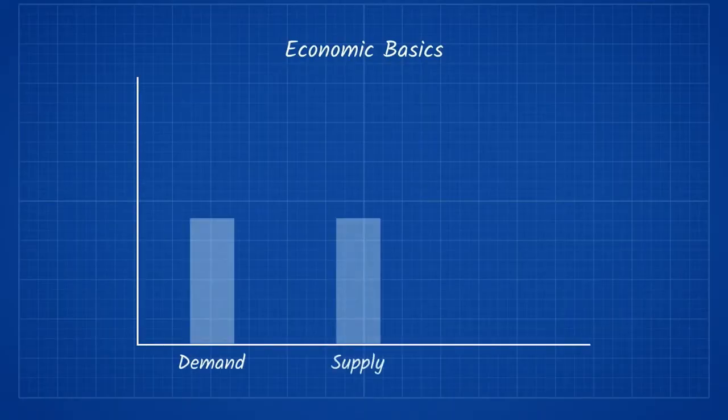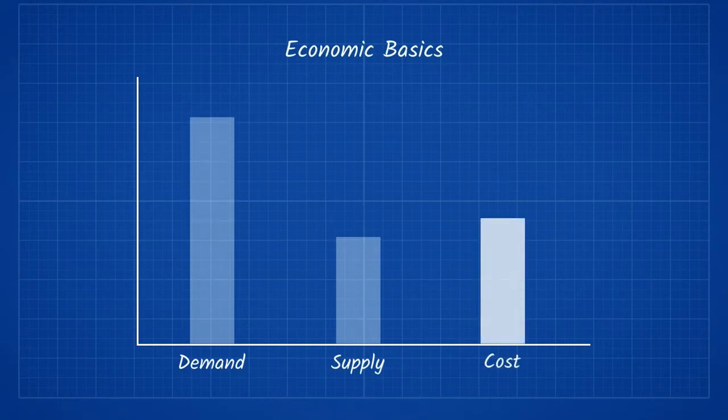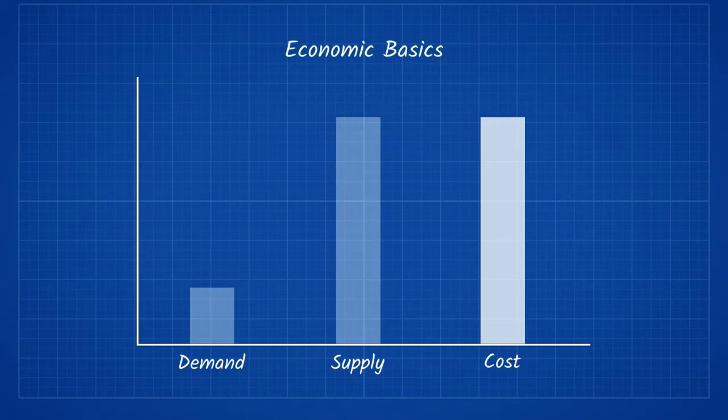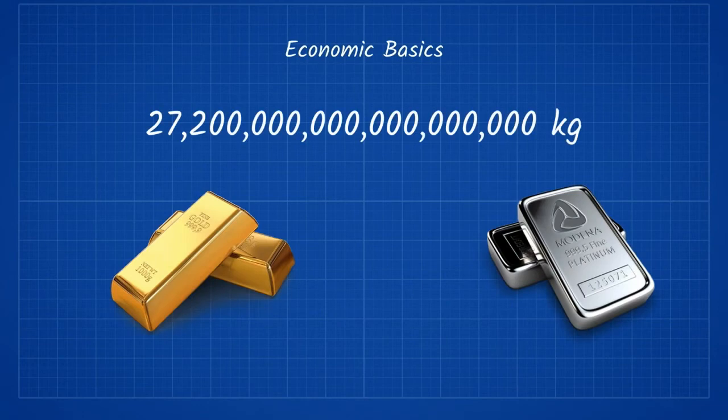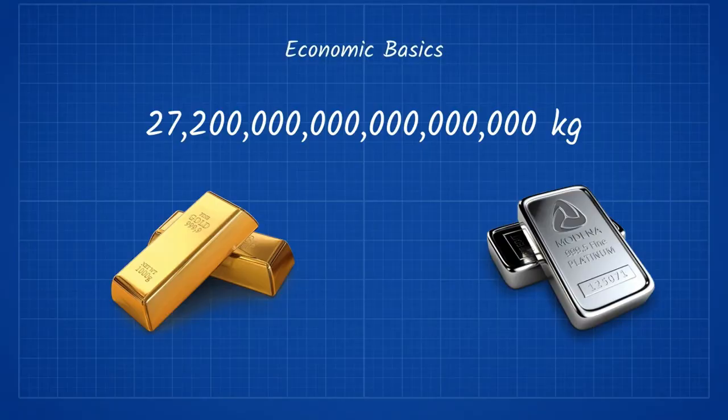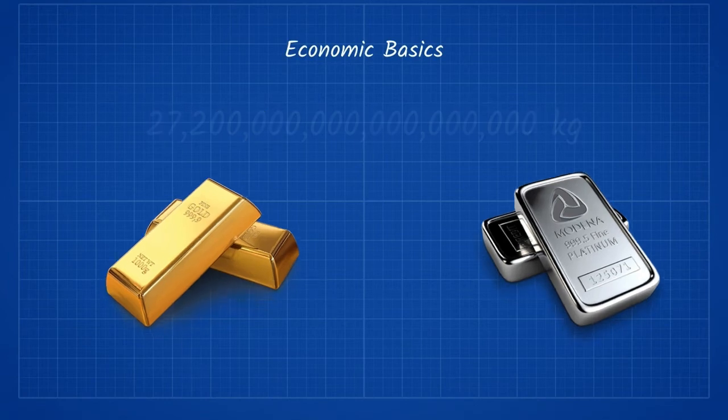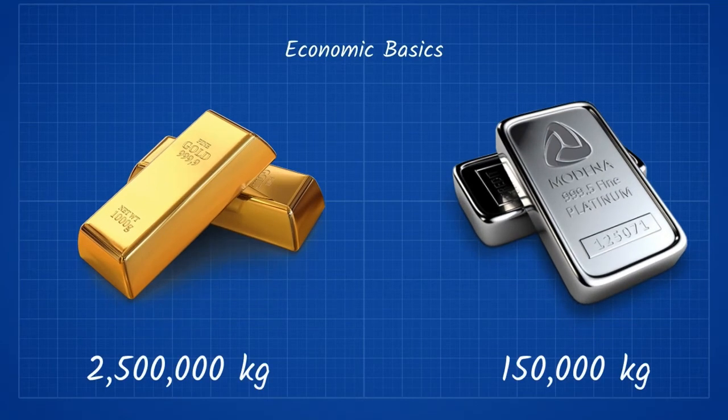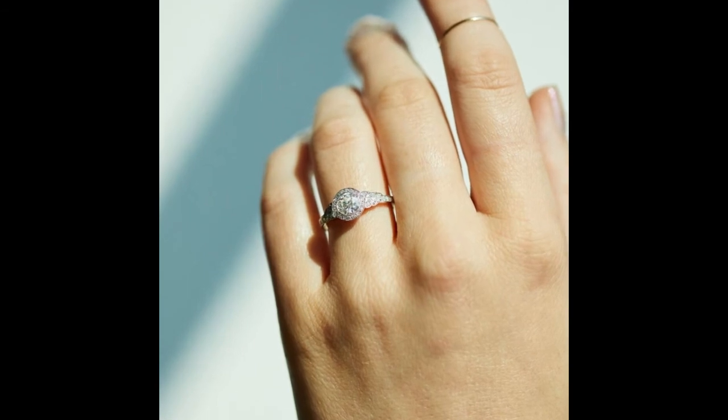As demand goes up or supply decreases, price goes up. Similarly, as the demand goes down or supply goes up, the price decreases. As I'm sure you can imagine, dumping 2.72 times 10 to the 19 kilograms of gold and platinum on Earth would send the respective prices down significantly. To put that into perspective, only 2.5 million kilograms of gold and 150,000 kilograms of platinum were mined this year. Gold and platinum would cease to be precious metals anymore.